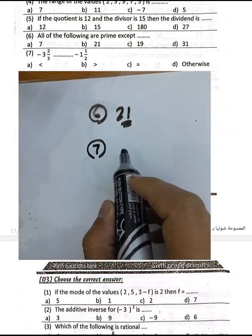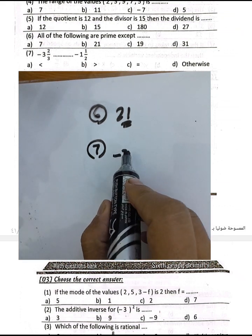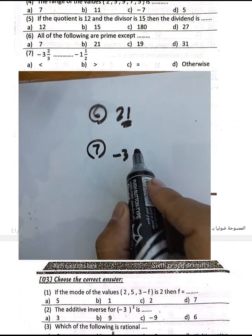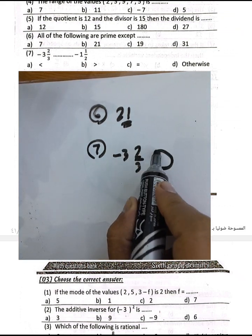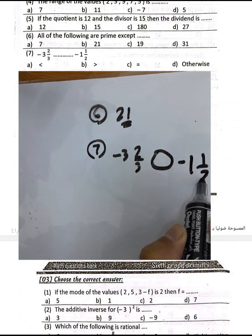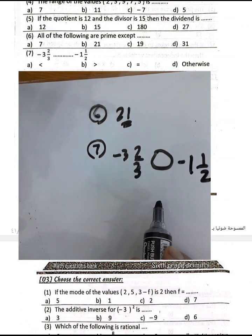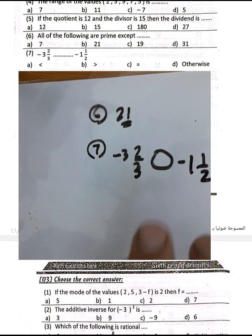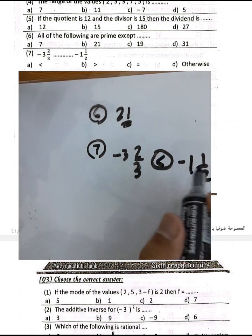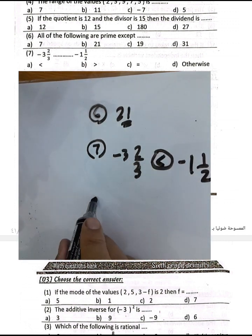Question number 7: comparing negative 3 and 2/3 with negative 1 and a half. Since negative 1 is greater than negative 2, and negative 2 is greater than negative 3, the comparison follows accordingly.